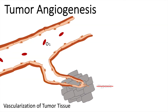Even worse, angiogenesis also makes it possible for the tumor to metastasize — to travel through the bloodstream and discover new places for growing. This is how a tumor essentially tricks the blood vessel into forming sprouts toward it. The release of pro-angiogenic factors ensures the tumor is ultimately supplied with enough nutrients.